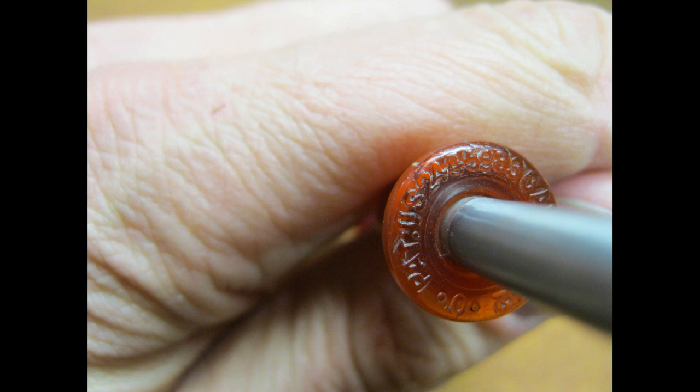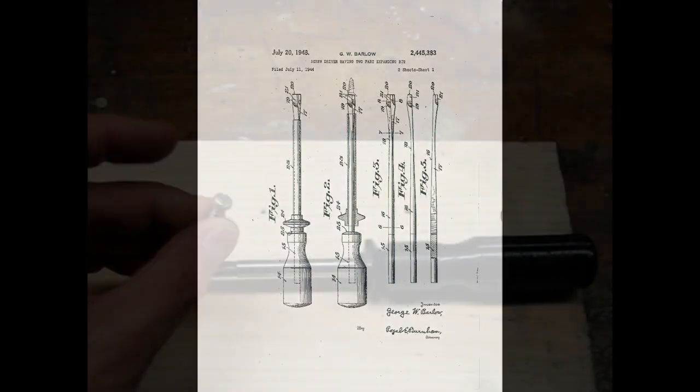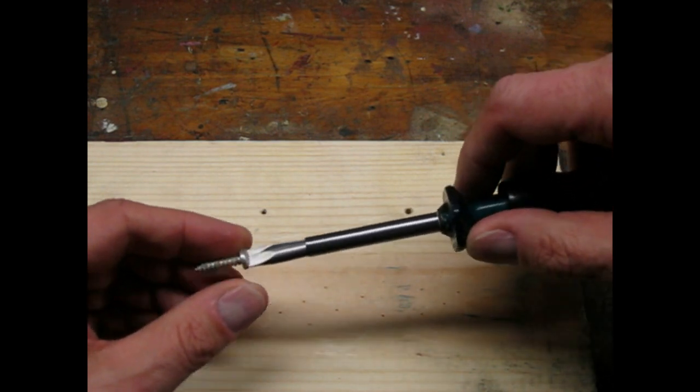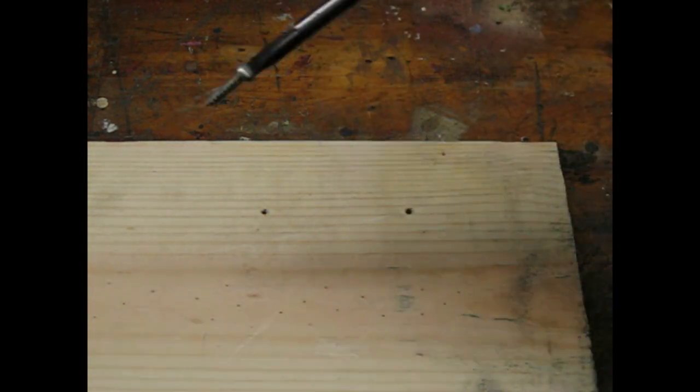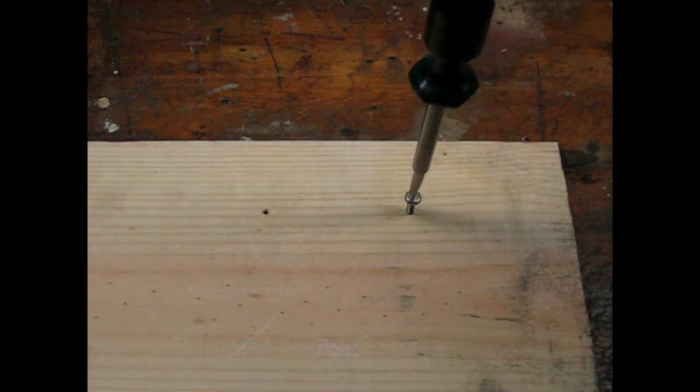Both screwdrivers have the same patent number. The patent dates to 1948 and shows how these screwdrivers work. The blade is actually made of two pieces. When the hollow shaft is pushed down toward the screw, the blades slide over one another causing a wedging action that holds the screw.